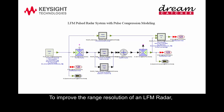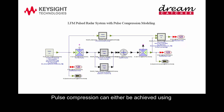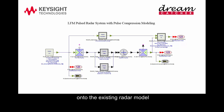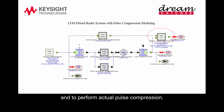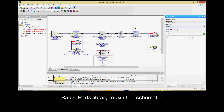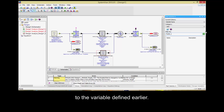To improve the range resolution of an LFM radar, pulse compression technique is commonly used. Pulse compression can either be achieved using the time domain convolution method or the frequency domain multiplication method. Two extra components will be added onto the existing radar model to generate the matched source signal for pulse compression and to perform actual pulse compression. Add the two extra components from the radar parts library to the existing schematic, and define the pulse repetition interval to the variable defined earlier.